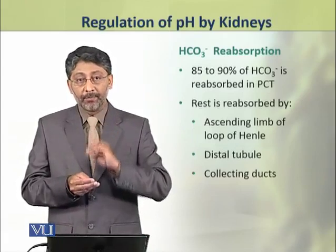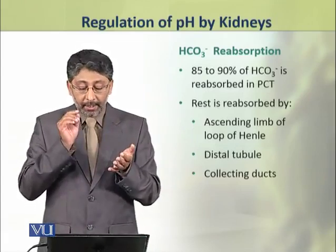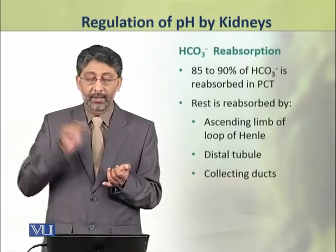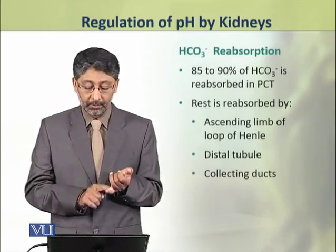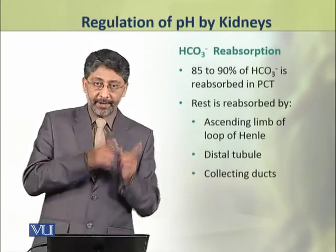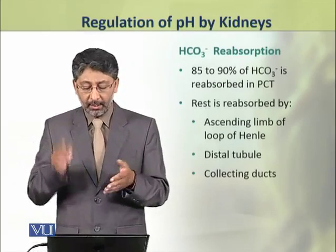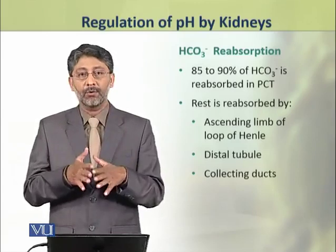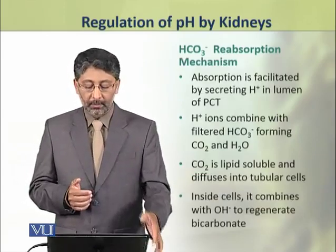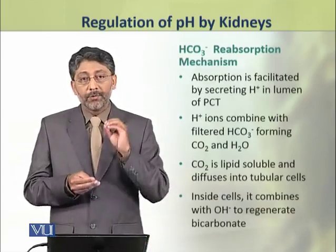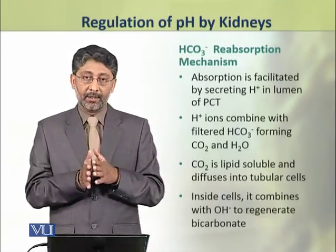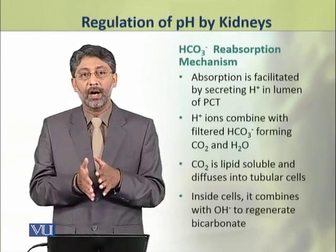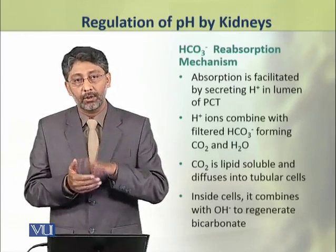85 to 90% of bicarbonate reabsorption occurs in the proximal convoluted tubules, while the rest are reabsorbed by the ascending limb of the loop of Henle, distal tubules, and the collecting ducts. Reabsorption is facilitated by secreting hydrogen ions in the lumen of the proximal convoluted tubules.